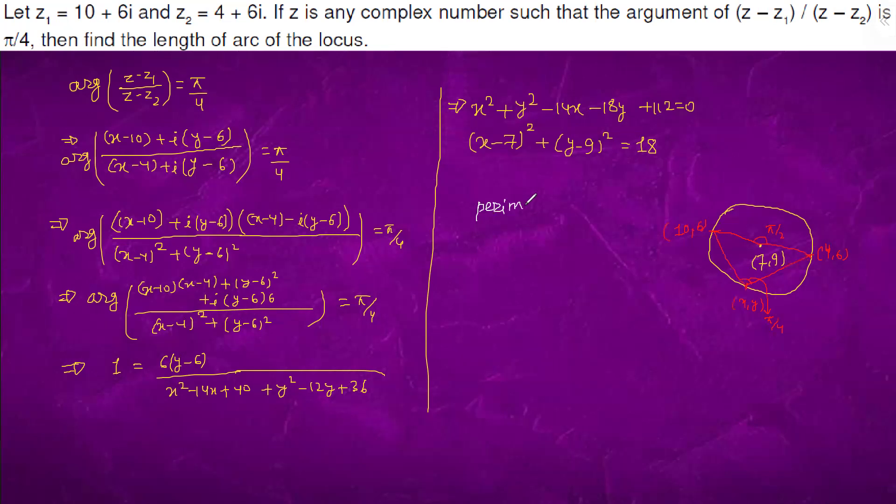Now we know that the perimeter of the circle is 2πr. R is 3√2, so this is 6π√2. We have to find one-fourth of the perimeter. One-fourth of the perimeter is (3/√2)π. This is the length of arc.